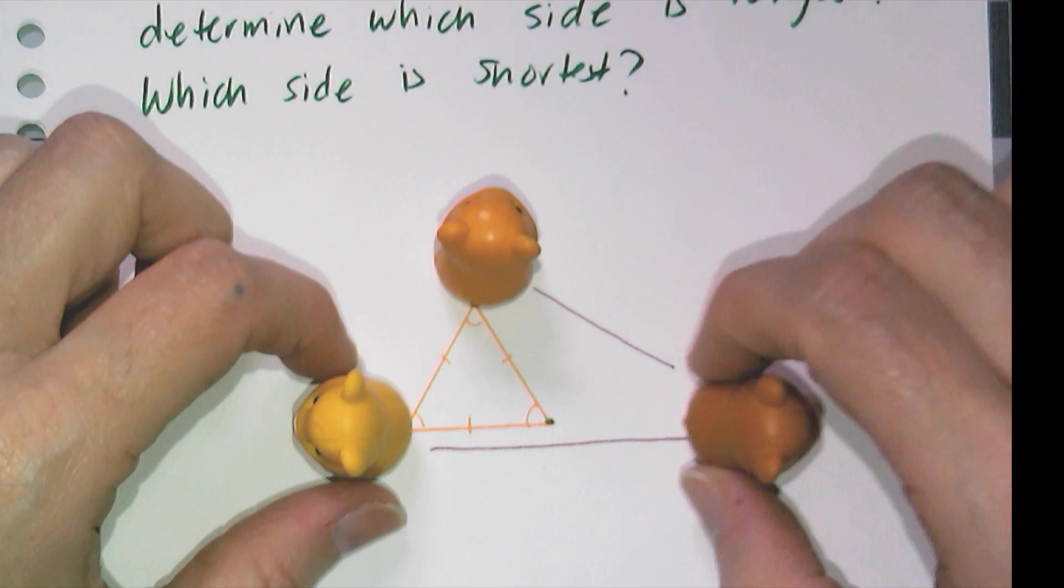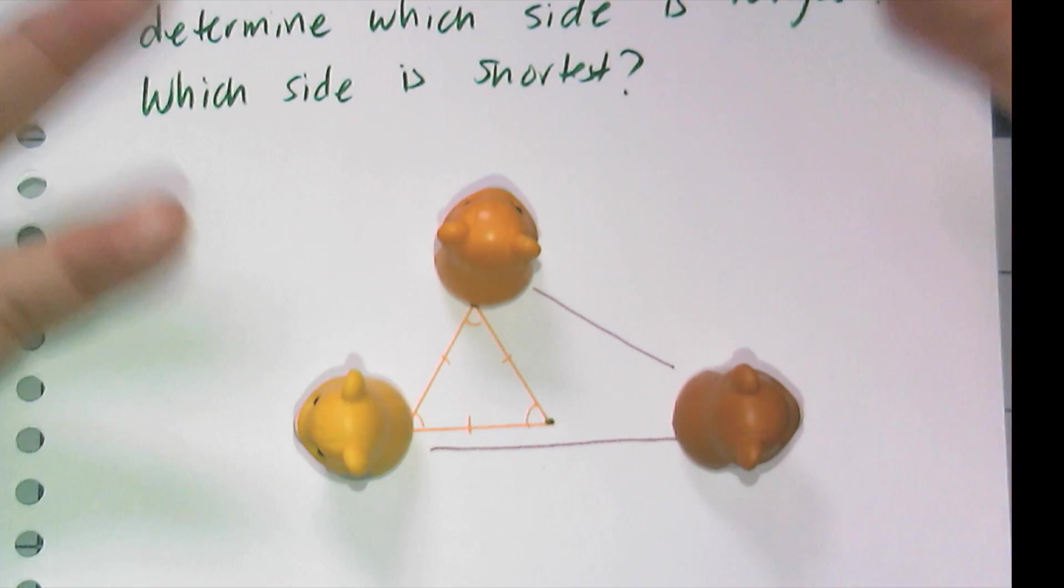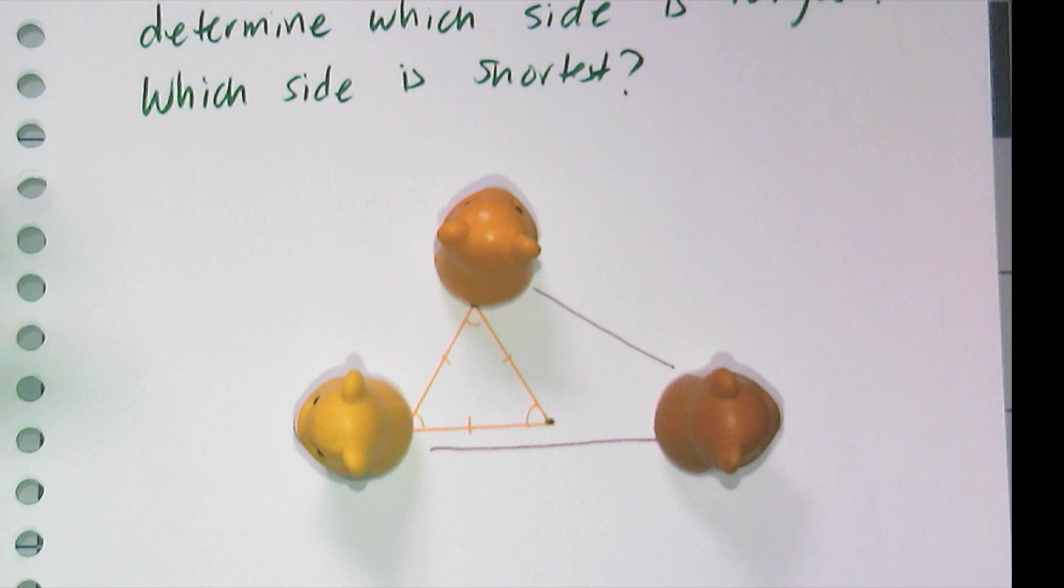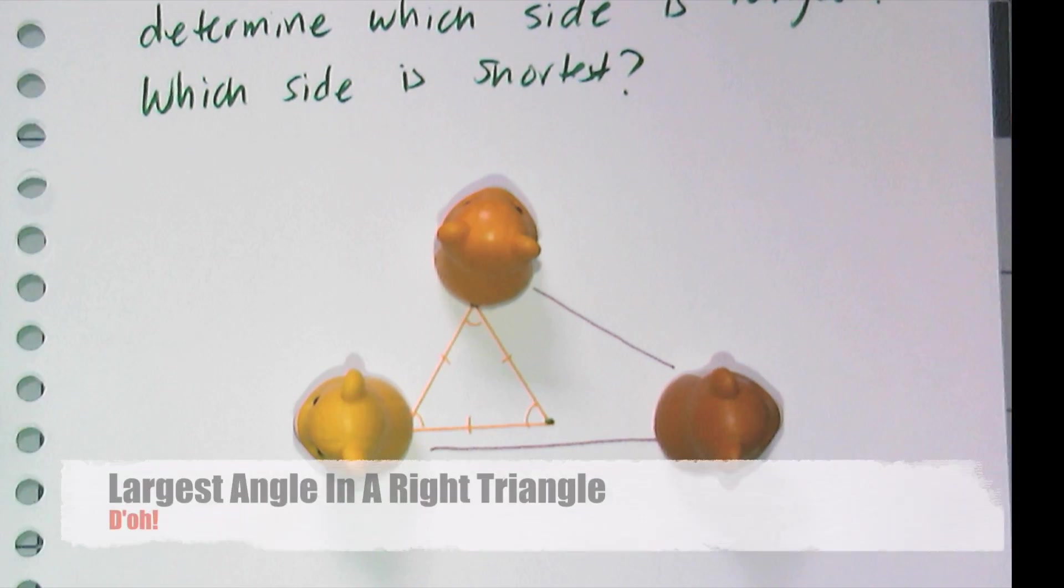And if I think back to triangles that I've worked with a lot, like a right triangle, I know on a right triangle the hypotenuse is the longest side, and that's the side opposite the right angle. And the right angle is the largest angle of a triangle.